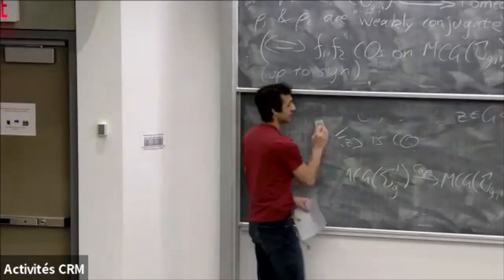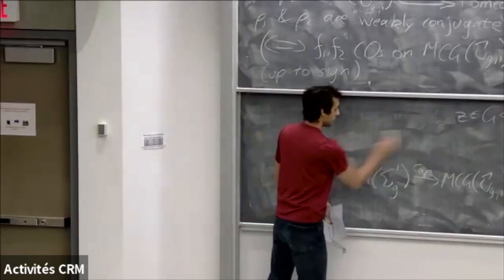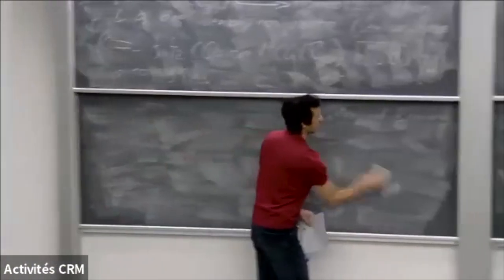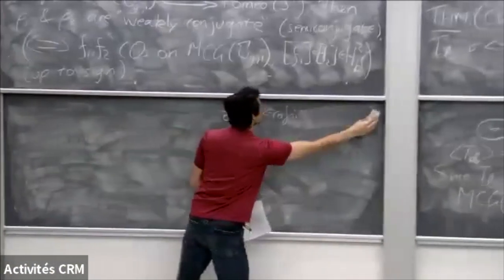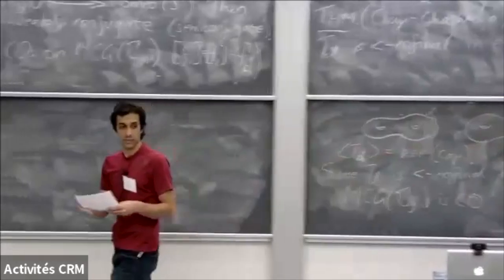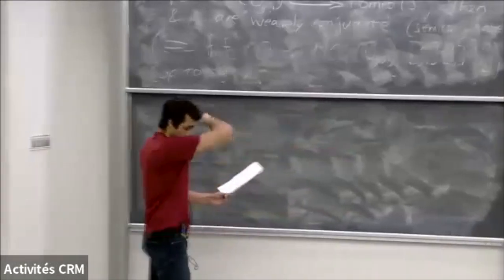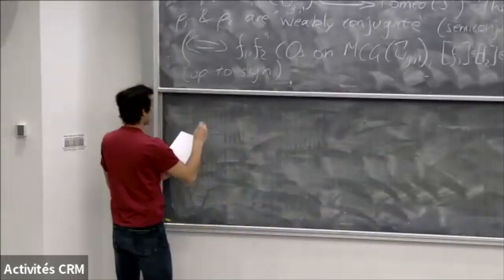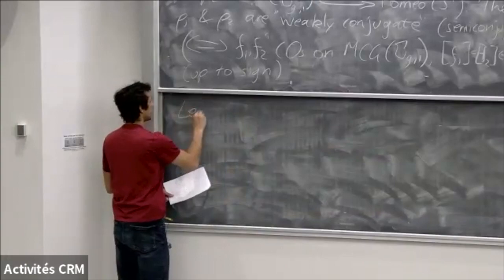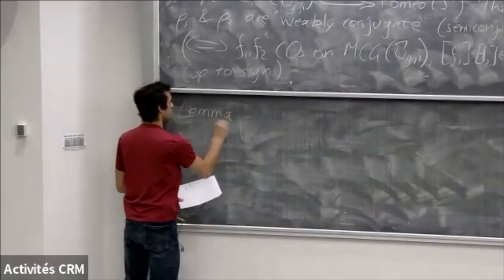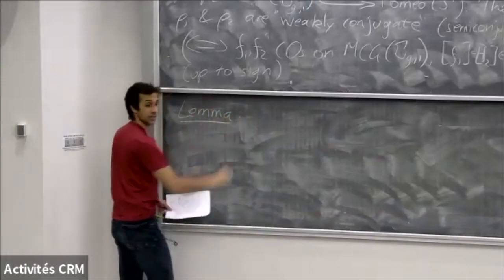Before we apply something similar to what Katie and Maxine do, let's sketch out the proof. The proof relies on the following lemma, which is a little exercise in orderable groups. The lemma says: let G be left-orderable, and z ∈ G a central element. Conveniently, mapping class groups have central elements — the Dehn twist around the boundary component is central.